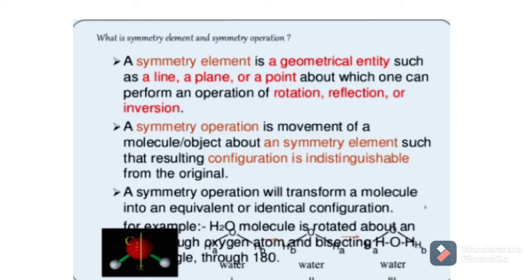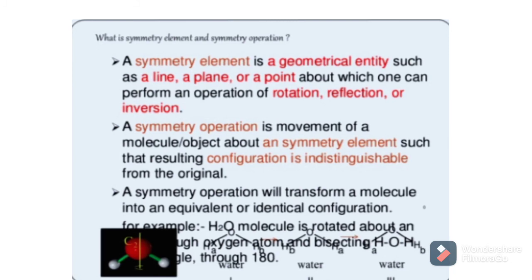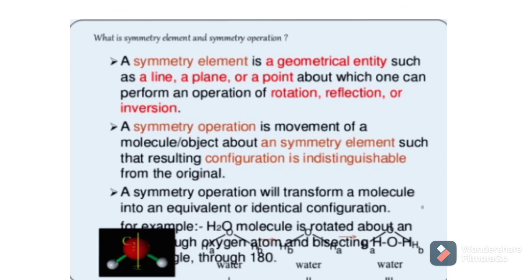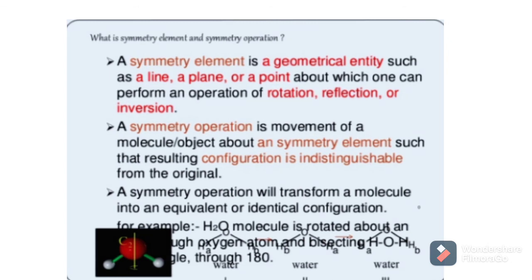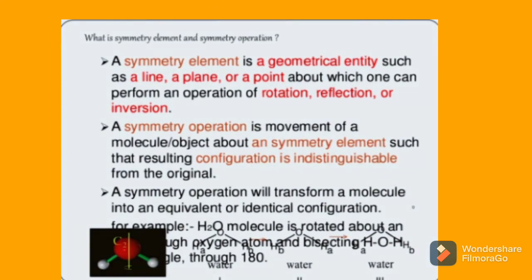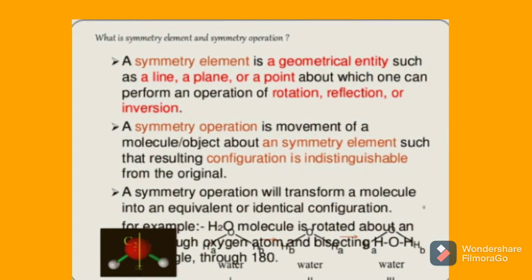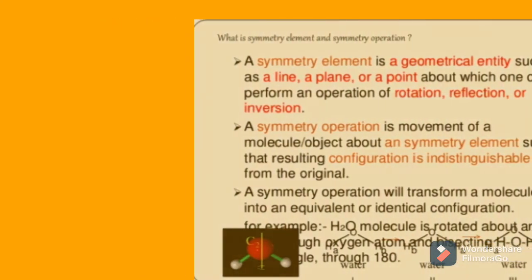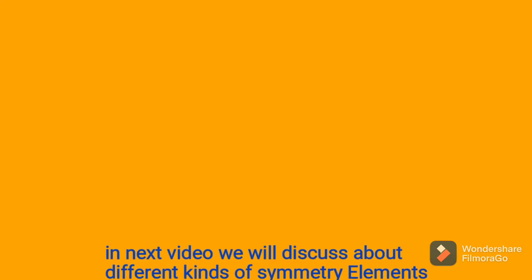After applying these operations, objects come back to their original shape. After various orientations are applied and after certain orientations they again come back to the original shape — these are symmetry elements and the operations are called symmetry operations. Now you will be able to understand different kinds of symmetry elements and symmetry operations, which we are going to discuss in the next video.